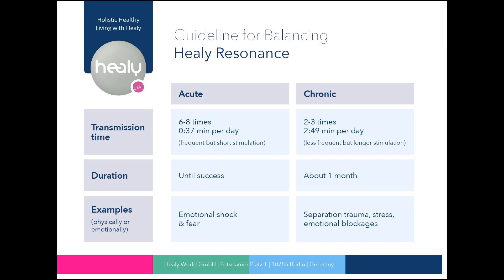Let us now proceed to the guideline for balancing. Lists pertaining to acute topics are usually sent more frequently but for a shorter period of time. Therefore they should be sent about six to eight times a day for a short transmission period of 37 seconds. The total transmission time depends on the success. Only after you have successfully balanced an issue should you create a new list and activate it again according to the guideline for balancing.